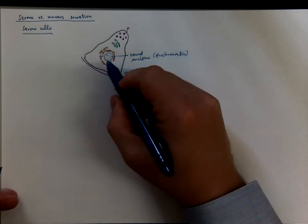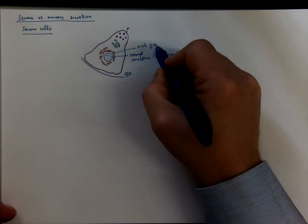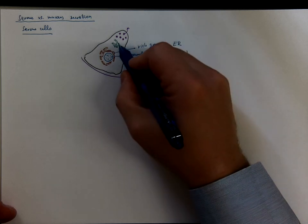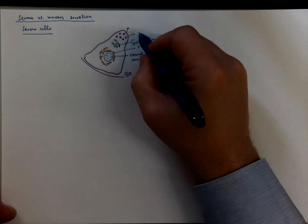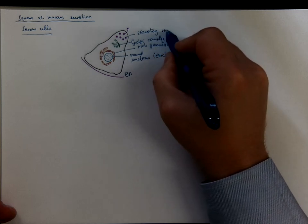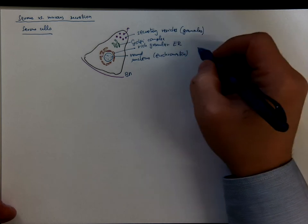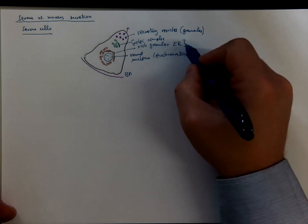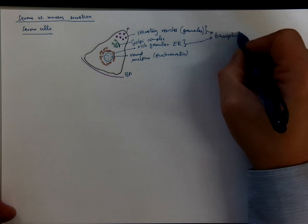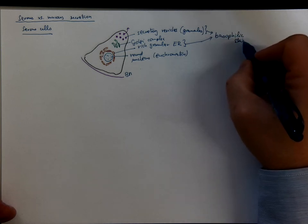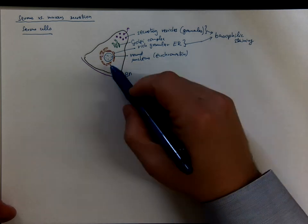Which tells you that most of the chromatin is accessible for transcription. There is a very rich granular endoplasmic reticulum, a well-developed Golgi complex, and there are secretory vesicles or granules. Especially the endoplasmic reticulum plus the secretory granules together are responsible for the basophilic staining. That means dark blue, dark blue purple. So the serous cells are mostly basophilic.